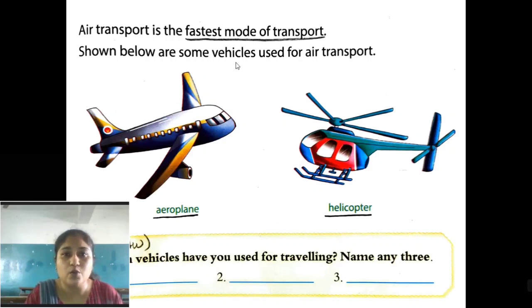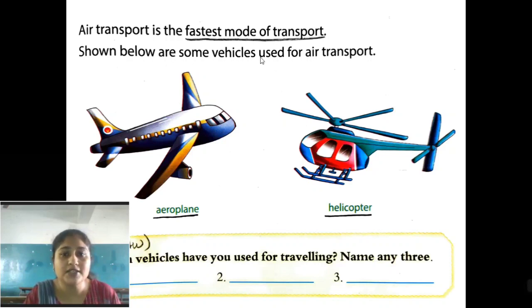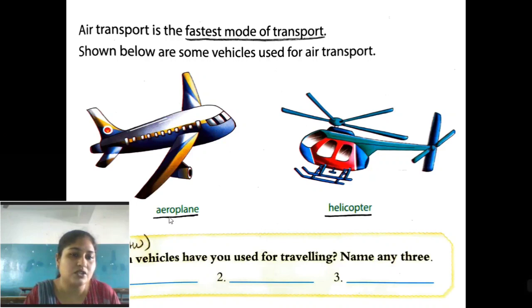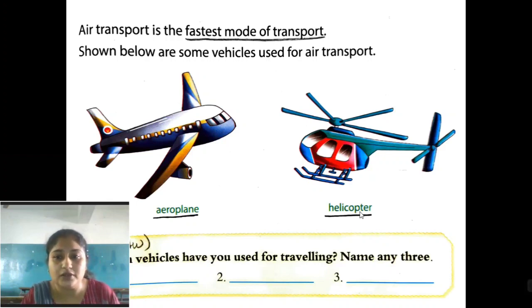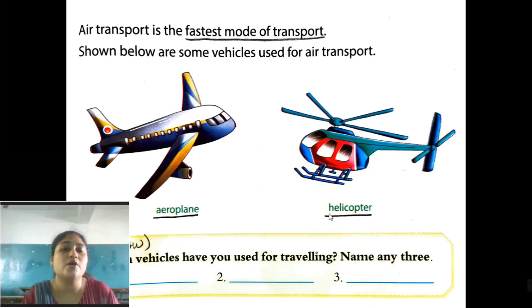Shown below are some vehicles used for air transport. This is the aeroplane — underline this. And this one is the helicopter — H-E-L-I-C-O-P-T-E-R. Aeroplane and helicopter — mostly these are used by common people.